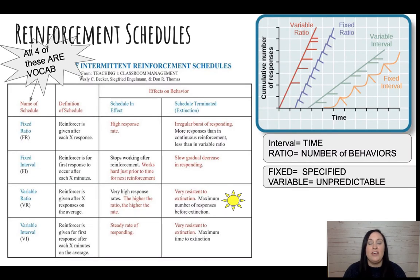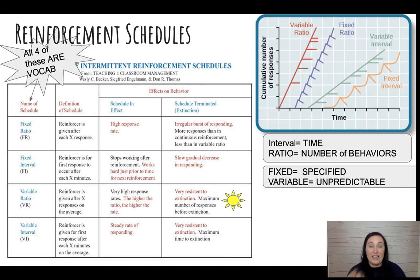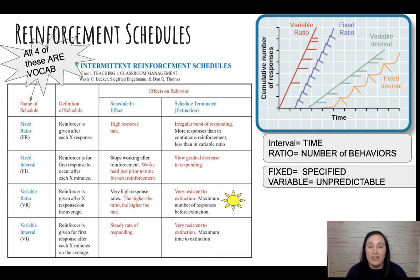There are four types of partial or intermittent reinforcement schedules — all four are vocab. Before looking at each one, note the key terms: interval means time; ratio means number of behaviors; fixed means a specific number or time; and variable means unpredictable.